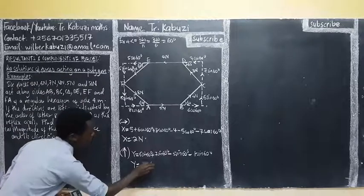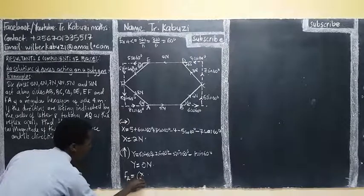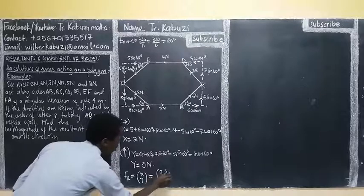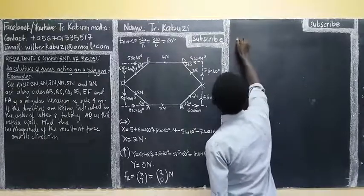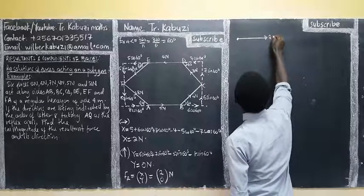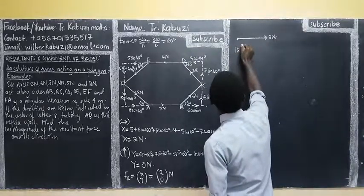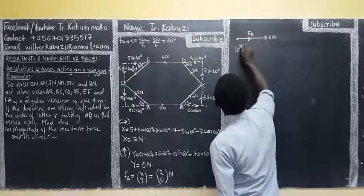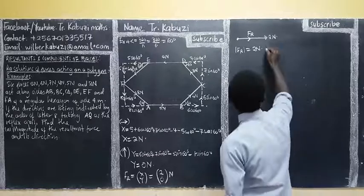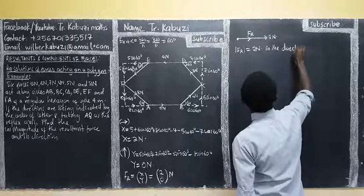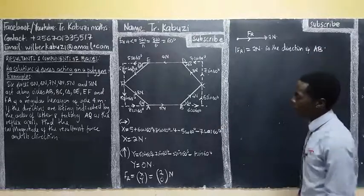When we put those things on the calculator, this one is giving me 0 for the Y component. So, as simple as that. Meaning that now our resultant force F is going to be (x, y) which will be 2, 0 newtons. So the resultant is going to be 2 newtons. The resultant is a single component force going horizontally only - 2 newtons, not going anywhere else. So our FR is going to be 2 newtons in the direction of AB.